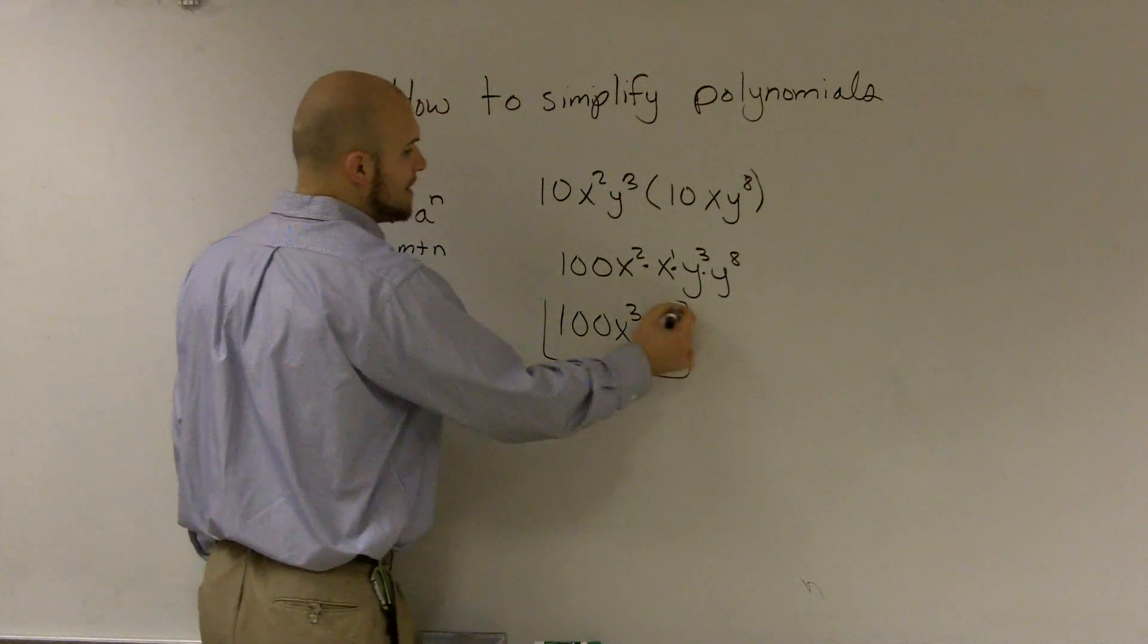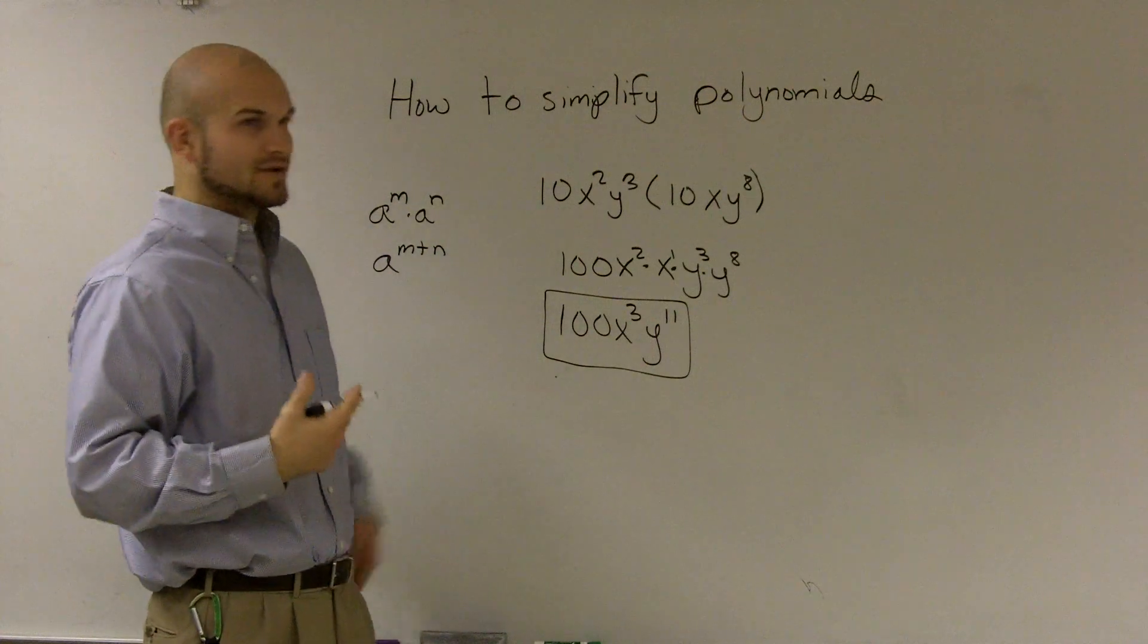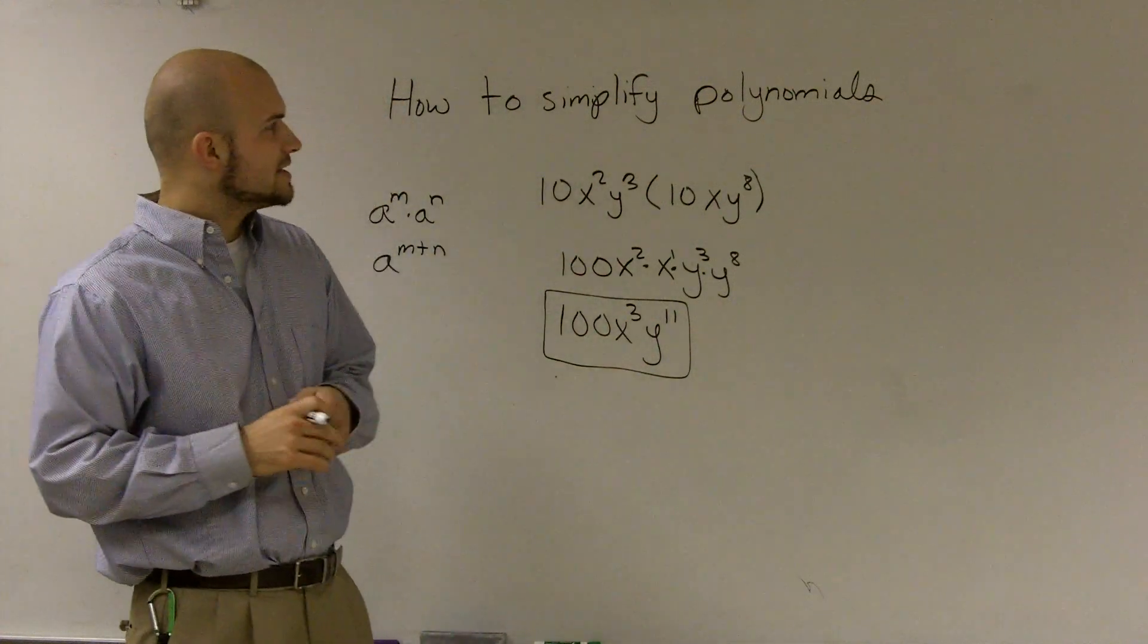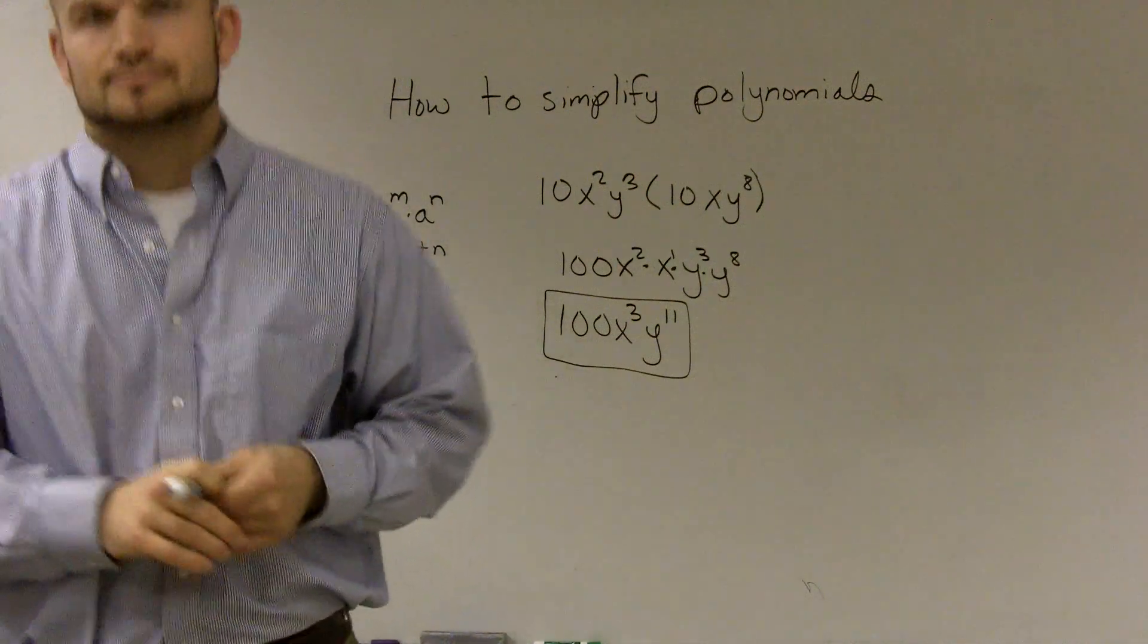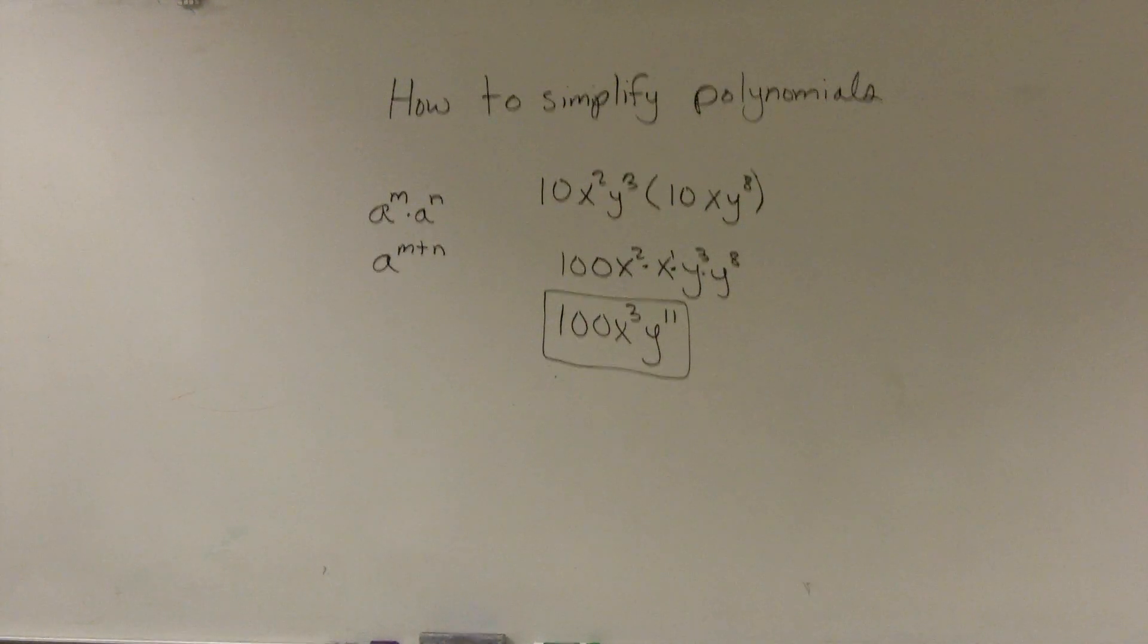Now my monomial is simplified, so I can actually now call it a complete monomial. That's how you simplify monomials by using your product property. So easy!